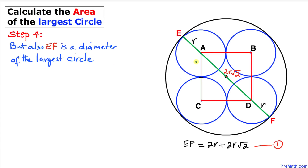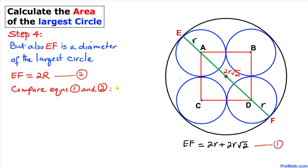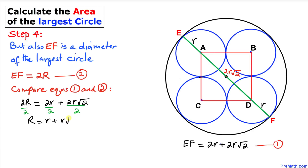We also know that EF is the diameter of the largest circle, which means EF = 2 times uppercase R. This is equation number two. Comparing equations one and two: 2R = 2r + 2r√2. Dividing everything by 2 gives us: R = r + r√2.